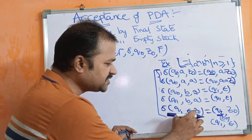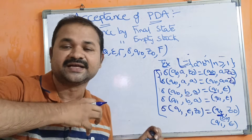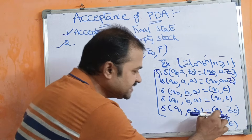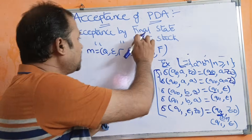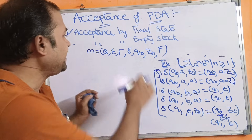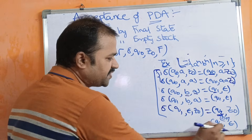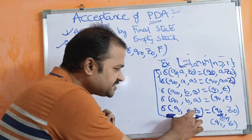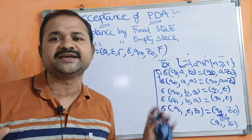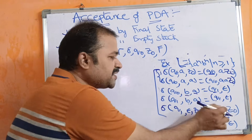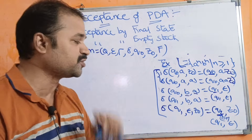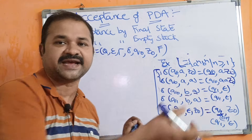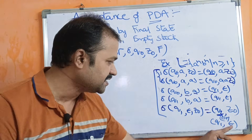Next, δ(q₁, ε, Z₀): here the input symbol is epsilon, meaning the entire input string is processed. Epsilon denotes end of the string and Z₀ denotes the stack is empty. For acceptance by final state, the transition is to q₂ with Z₀ — we change state from q₁ to q₂, where q₂ is the final state, without changing the stack content. For acceptance by empty stack, the transition is q₁ with epsilon — we remain at q₁ but pop Z₀ from the stack, leaving the stack empty.